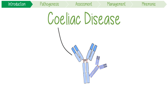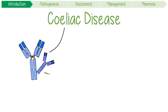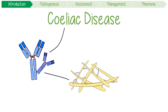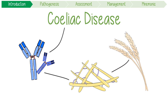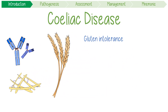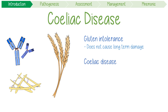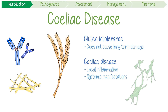Celiac disease is an autoimmune condition triggered by dietary gluten, which are proteins found in grains like wheat. It's very different to a gluten intolerance, where small amounts of wheat-based products don't cause long-term damage but sometimes dysfunction and discomfort. In contrast, gluten in someone with celiac disease can cause local inflammation in the small intestine, systemic manifestations, and increases your likelihood of cancers like lymphoma.